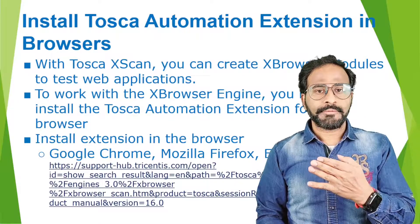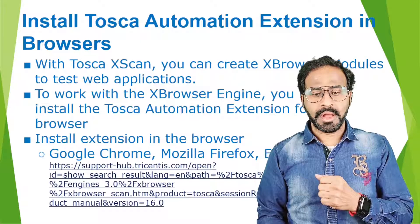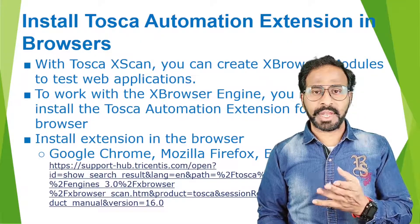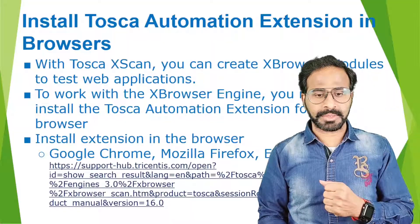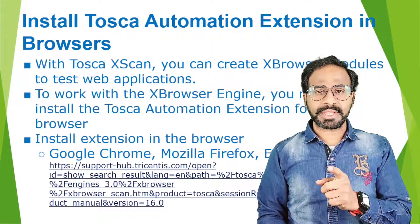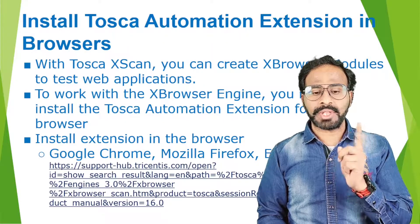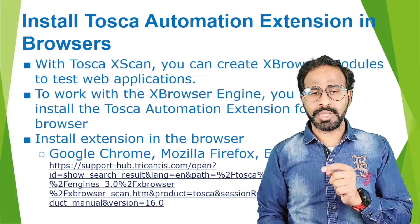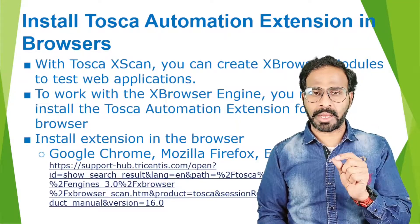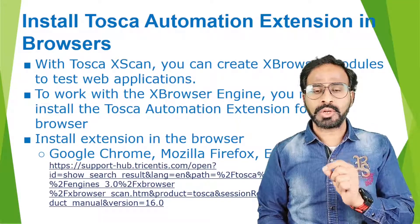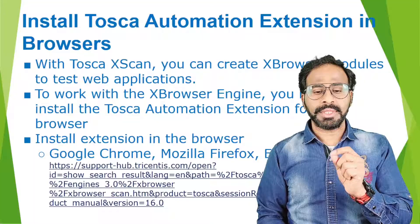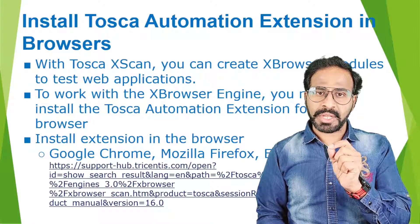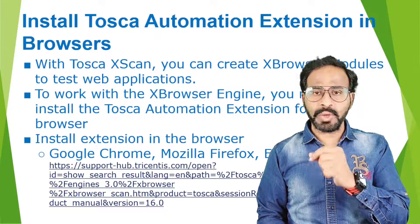For Chrome, you have an extension. For Mozilla Firefox, you have an extension. For Edge, you have an extension as well. To install the extension, follow the link I've pasted in the description. You can also see the link on screen — that's the link I'm going to use to install the Tosca Automation Extension in different browsers.